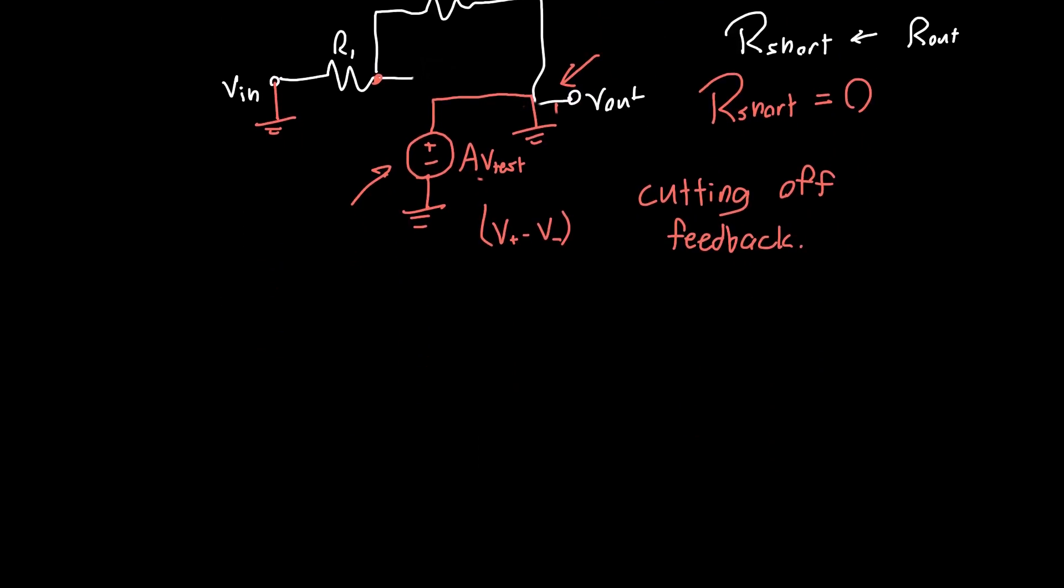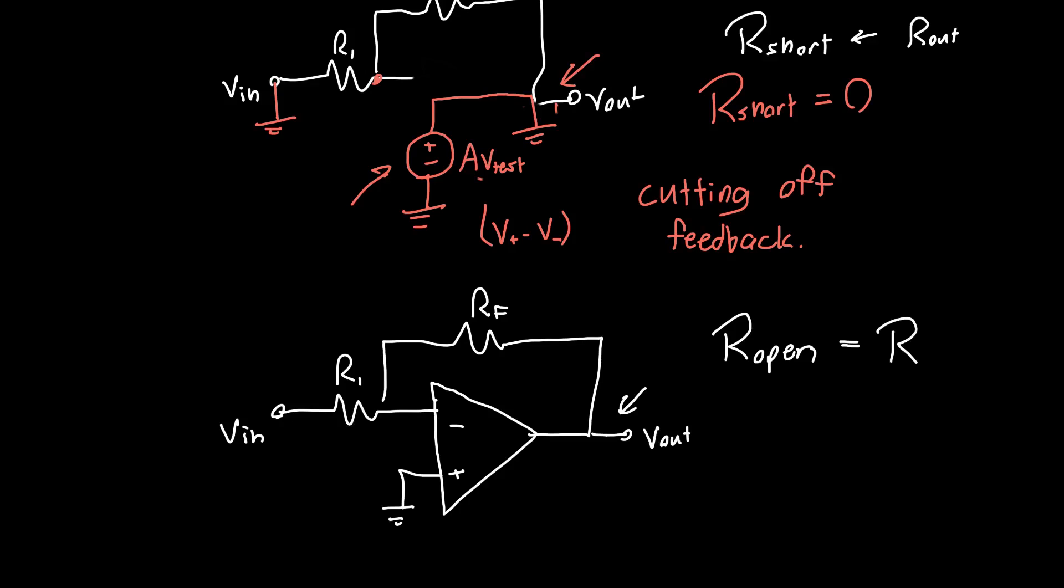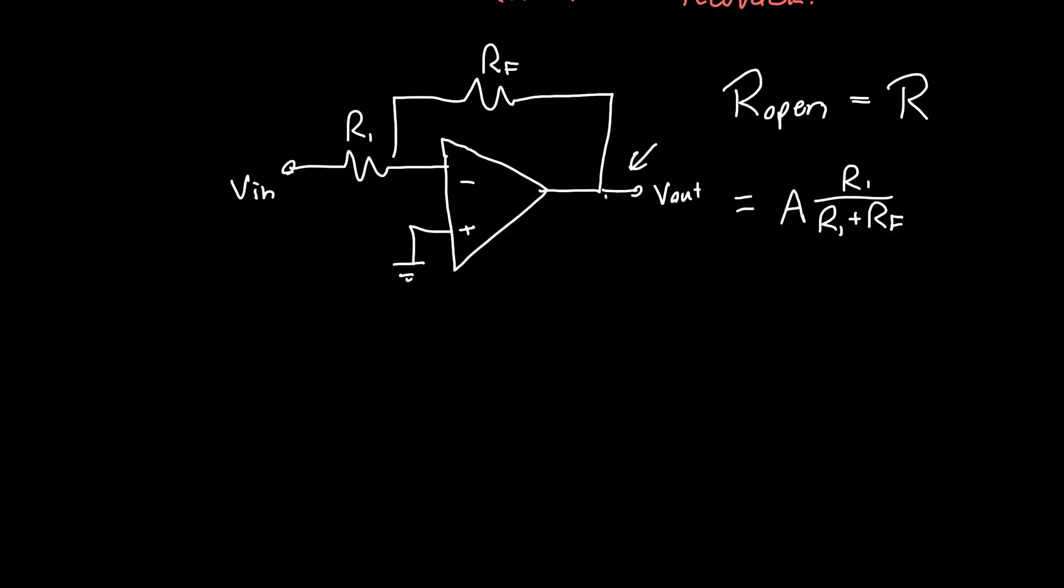What about the return ratio with that port open? Well, we know what to do by now. We just redraw our amplifier. And I do calculate the return ratio of this system in a previous video, so if you want to see it more in detail, you can go look at that. R open, the return ratio with this output port open, is exactly the same as the regular return ratio for this circuit because we're not doing anything to the port. We're not shorting it to ground, we're not poking it with anything. We're just leaving it open like it is right now. And so if you calculate it, you'll get that this is equal to the gain of the amplifier times R1 over R1 plus RF. So that's cool. We have all three quantities that we need now. This is also A times the feedback factor.